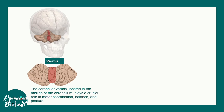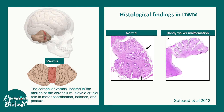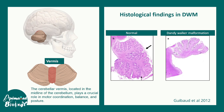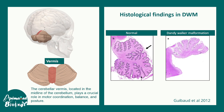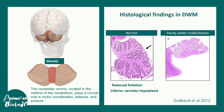The vermis area of the cerebellum is important for motor coordination and plays a crucial role in balance and posture. Histological findings of Dandy Walker malformation show an overall reduction in the foliation of the cerebellum, but the most affected region is the flocculonodular lobe and the overall number of lobules is reduced. Overall, the inferior part of the vermis is undergoing hypoplasia.